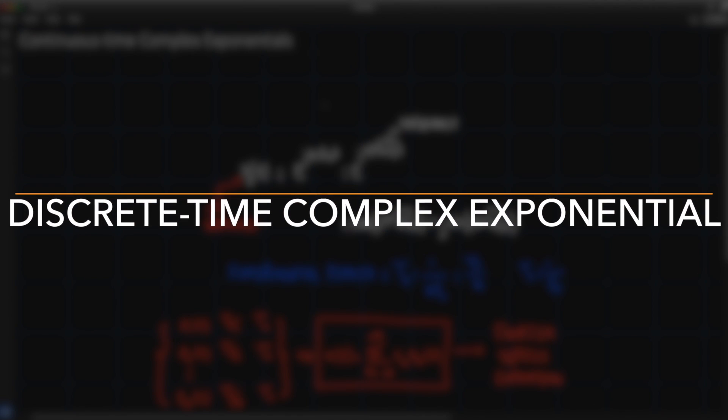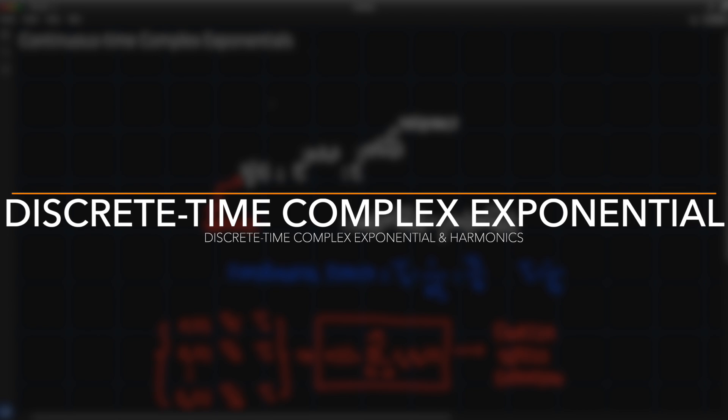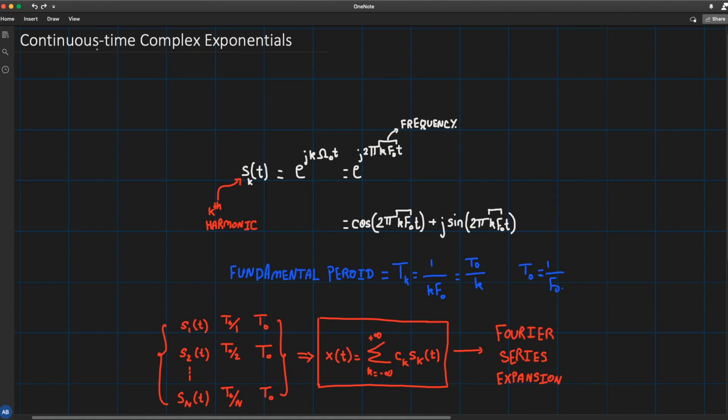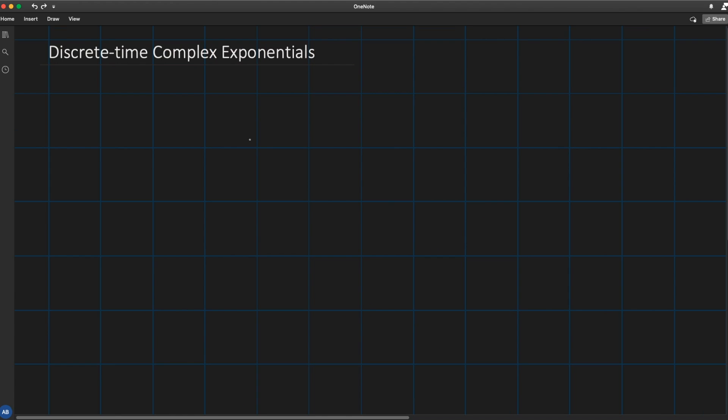Now just like we defined a complex exponential for the continuous time we're going to do the same thing for discrete time. So we're going to define a signal that is s_k(n) which is the exponential e^(j2πkf₀n) and this signal has frequency f₀.